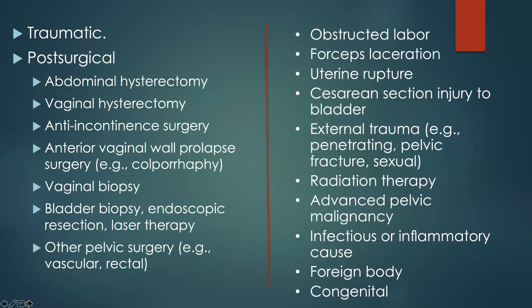The entire spectrum of etiology includes traumatic causes, post-surgical causes, following episiotomy, and a very important new subset — after anti-incontinence surgery, anterior vaginal wall prolapse surgery, and vaginal biopsies, which are increasingly being done. There are increasing reports of urethrovaginal fistula after these surgeries. Traditional causes like obstetric labor, forceps, and lacerations are all there, which you must be well-versed with.